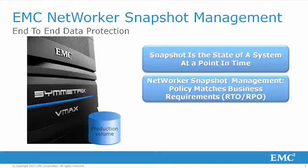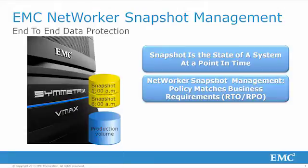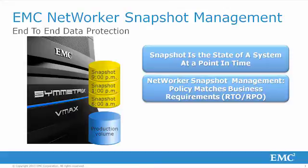In most typical snapshot use cases, multiple snaps are often required. For example, a snap may be required first thing in the morning before the business opens, another snap made part-way through the day after a specific job has been run, and finally at the end of the day, let's say around 9 p.m. The administrator has the flexibility to configure any number of snapshots, and the intelligent pairing feature within the storage array means NetWorker will automatically select the appropriate LUNs for the snapshots.